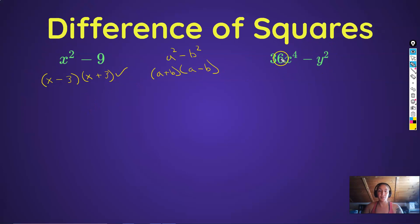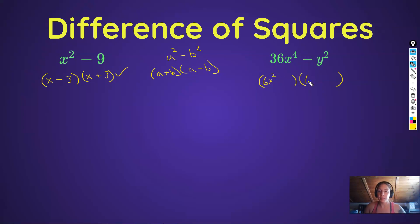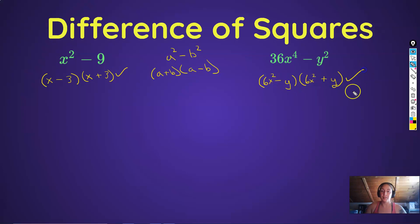For a more complex example: 36x⁴ − y². This is also a difference of squares — 36 is a perfect square, and x to the fourth is a square term since any even power is a perfect square. The square root of 36x⁴ is 6x² (just cut the exponent in half). The square root of y² is y. Separating with a plus and minus, the factored form is (6x² + y)(6x² − y).